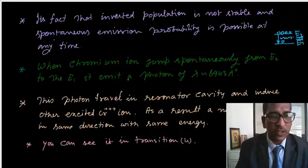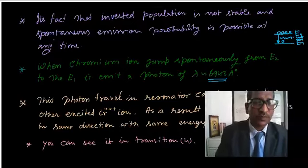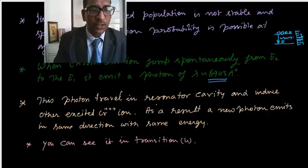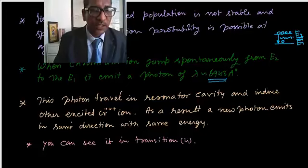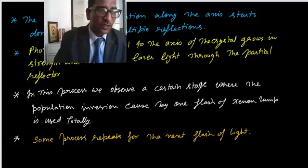Chromium ion jumps spontaneously from E2 to E1 and emits a photon of wavelength 694.3 angstrom. This photon travels in resonator cavity and induces other excited chromium ions. As a result, new photons are emitted in the same direction with same energy.